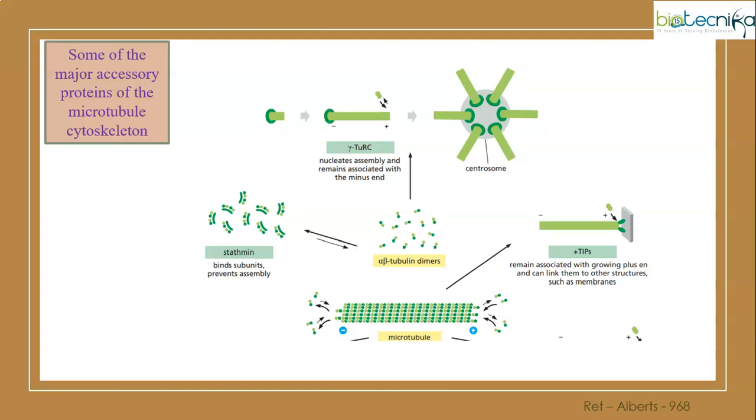Here are some major accessory proteins related to microtubules. Gamma-tubulin will attach to the minus end of microtubules, thereby helping in nucleation, that is assembly. Stathmin will bind to the subunits of microtubules preventing assembly - we have alpha and beta subunits. Assembly prevention is called a catastrophic event. Next we have plus tips, which bind toward the plus end of the microtubule, where they are linked to structures like membranes.